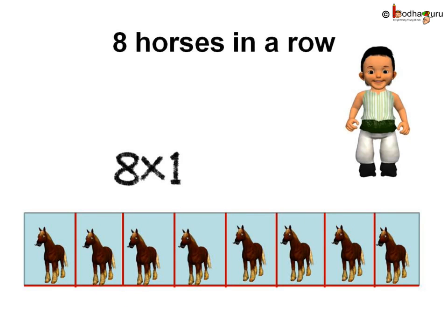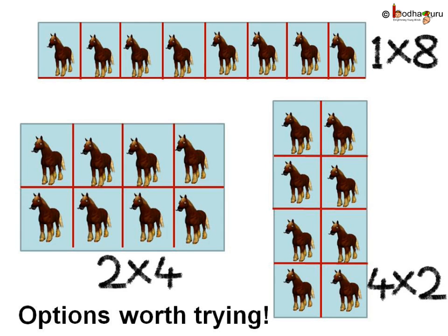The only option left was that he could arrange them in a single row. So the number of rows is equal to 1 and the total number of horses is equal to 8 into 1, which is 8. This also worked for him without wasting any space.